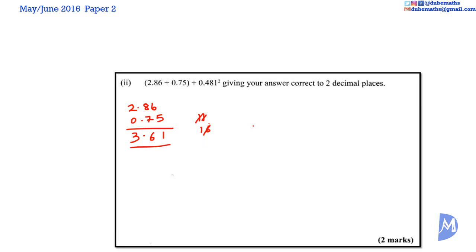We work it out by multiplying 0.481 multiplied by 0.481 without the decimal point to begin with. We have 481 multiplied by 481.